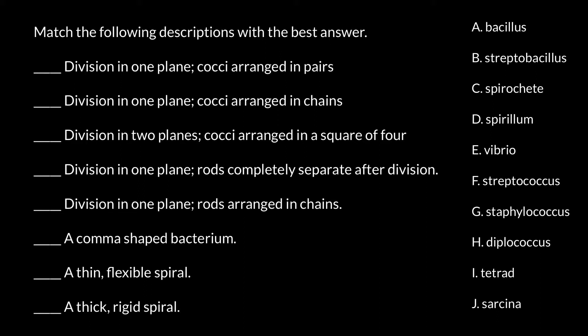Cocci gives us the idea that this bacterium is round and it is arranged in pairs. Knowing that it is round and arranged in pairs, we know that the name should consist of 'cocci' and 'diplo', which means two. And this is answer H: diplococcus.